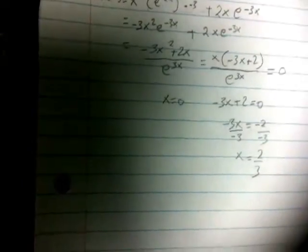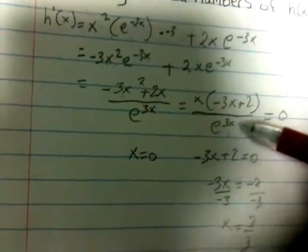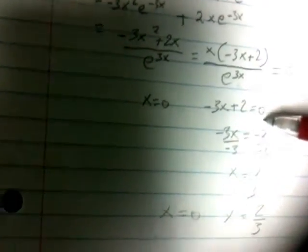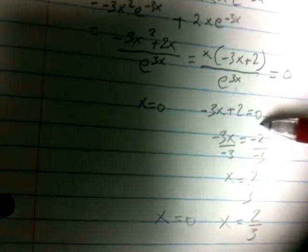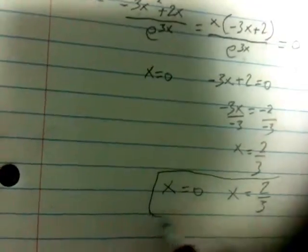We have two critical numbers. We have x equals 0 and x equals 2/3. We cannot take the critical number of the e^(3x) because e^(3x) could not be equal to 0. Never. So these are just only our critical numbers.